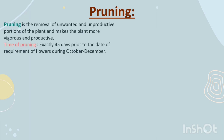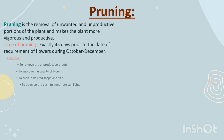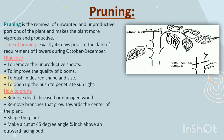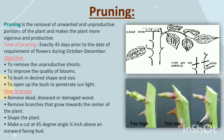Pruning. Pruning is the removal of unwanted and unproductive portions of the plant and makes the plant more vigorous and productive. Time of pruning: exactly 45 days prior to the date of requirement of flowers, during October to December. Objectives: to remove unproductive shoots, to improve the quality of blooms, to bush in desired shape and size, and to open up the bush to allow sunlight penetration. How to prune: remove dead, diseased or damaged wood; remove branches that grow towards the centre of the plant; shape the plant; make a cut at a 45-degree angle, one-quarter inch above and outward-facing bud. The first picture shows a cut too high, the second too low, and the third is the correct way to make a cut.